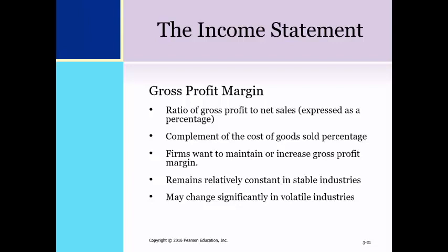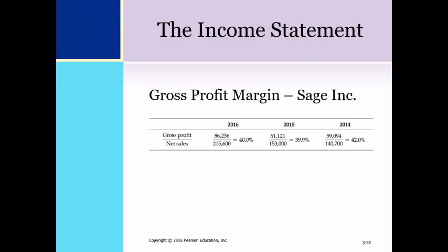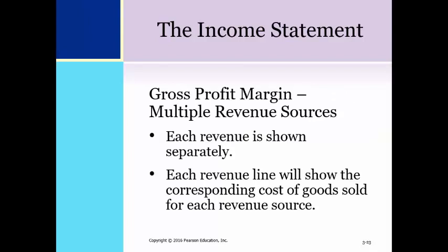Generally, firms want to maintain the relationship between gross profit and sales, or if possible, increase gross profit margin. In stable industries such as groceries, one can expect the same gross profit margin from year to year because companies raise prices proportionately as cost of goods sold increases. In volatile industries such as high technology, gross profit margin may increase or decrease significantly from year to year. For example, Target had gross profit margins of 30% for 2011, 2012, and 2013, whereas Seagate Technology had 19.6%, 31.4%, and 27.5% respectively in the same three years. This slide illustrates the gross profit margin for Sage for 2014, 2015, and 2016.